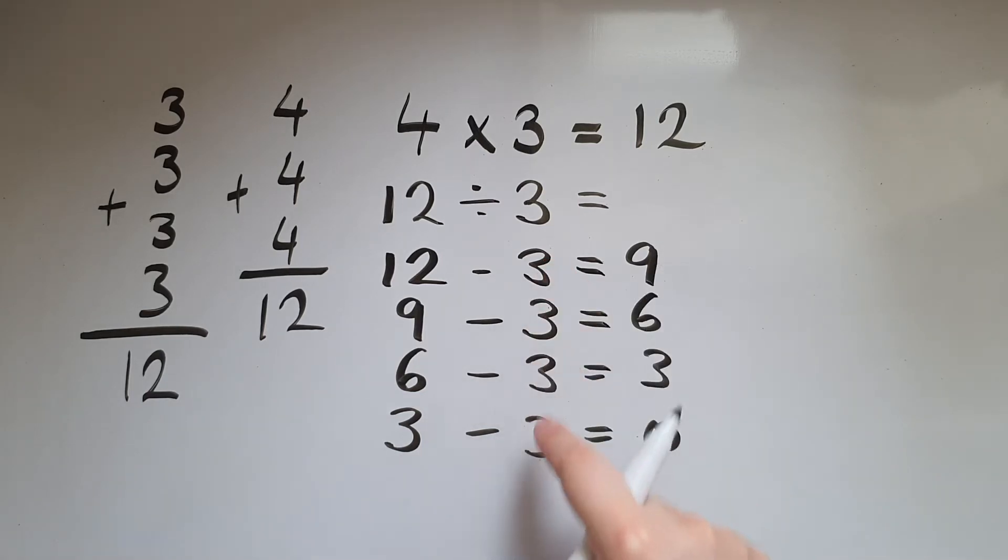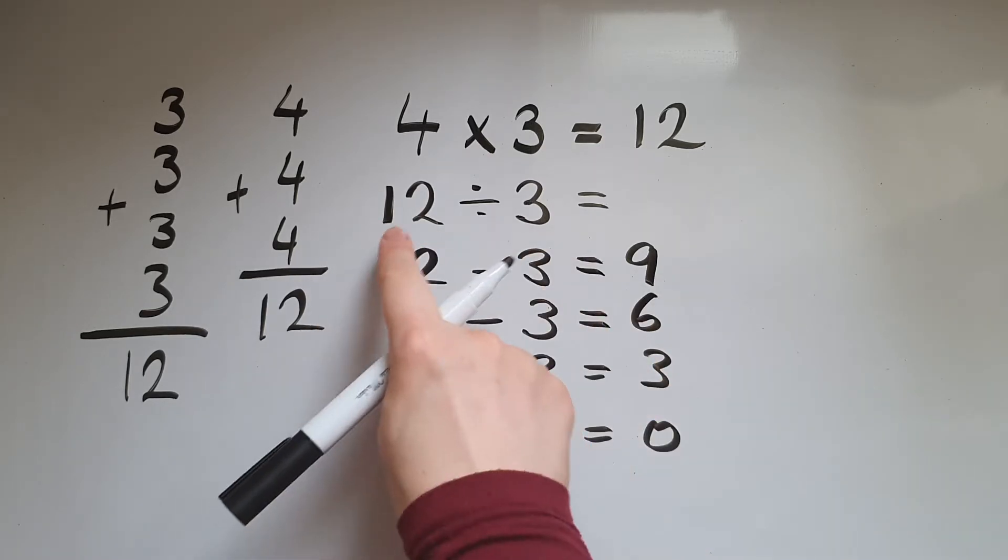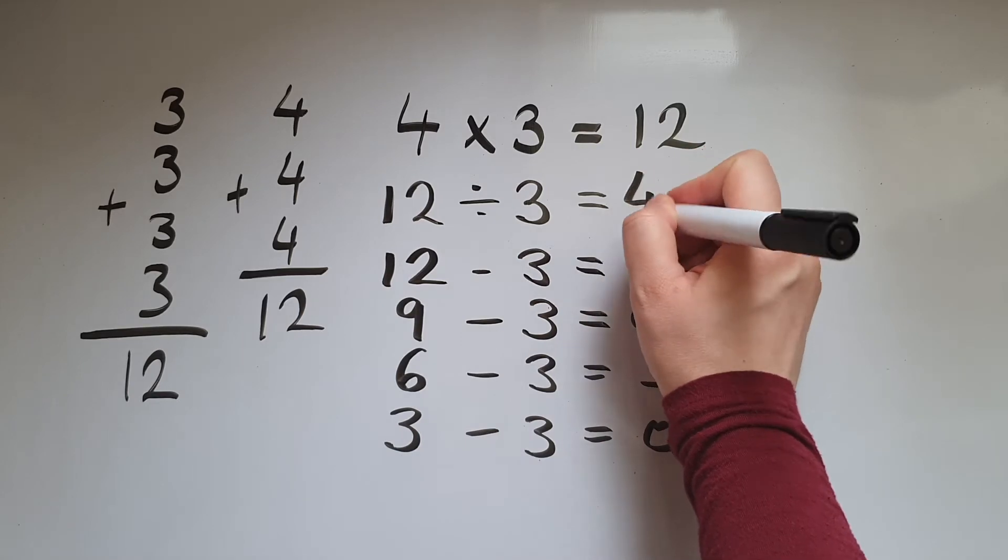So how many lots of 3 did I take away? 1, 2, 3, 4 of them. So 4 lots of 3 make 12. Therefore 12 divided by 3 gives us 4.